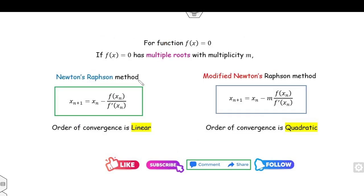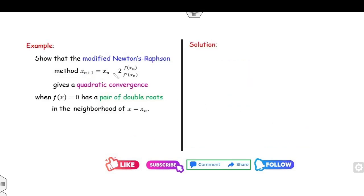Whenever you have a function with some multiplicity and apply Newton's method, the rate of convergence is always linear. On the other hand, whenever you have multiplicity m greater than 1 and apply the modified Newton's method, the order of convergence is quadratic. To prove this is very simple — I will consider the case m = 2, a double root. The rest you can easily do on your own.